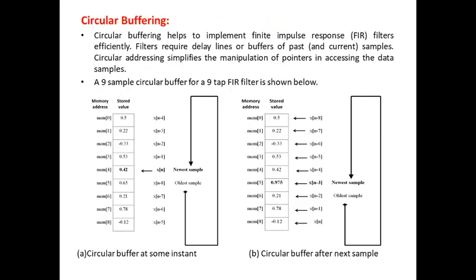This disadvantage is overcome in circular buffering. Circular buffering is very efficient in implementing FIR filters. It requires delay lines or buffers of past and current samples. Circular addressing simplifies the manipulation of pointers in accessing the data samples.